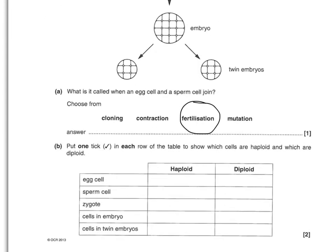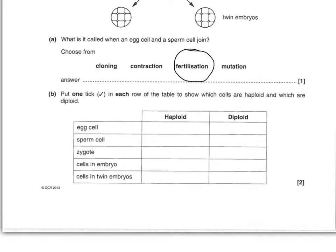The next question says: put one tick in each row of the table to show which cells are haploid and which are diploid. Egg cells and sperm cells only have half the number of chromosomes needed — they're both haploid. All the others are diploid. If you've got them all correct, that's two marks. If you've got three of them correct, that's one mark.